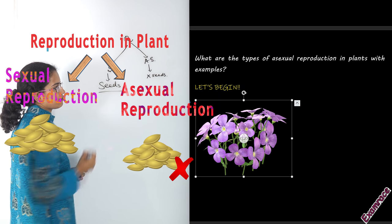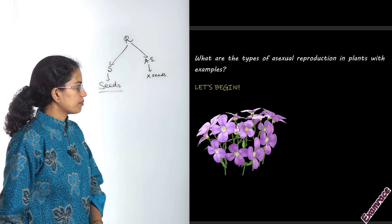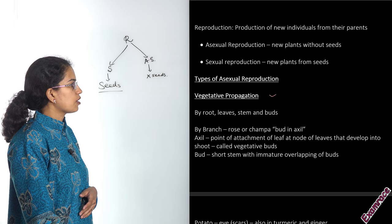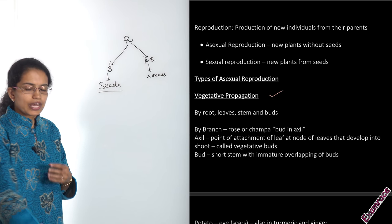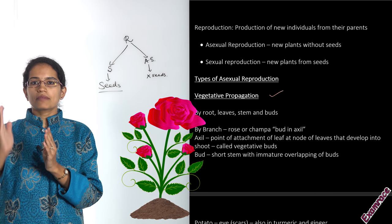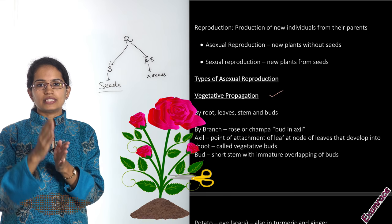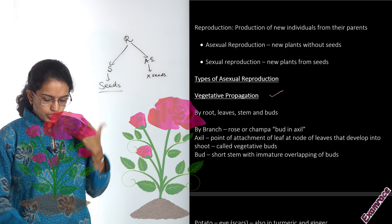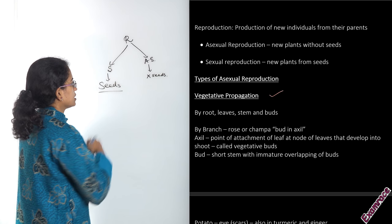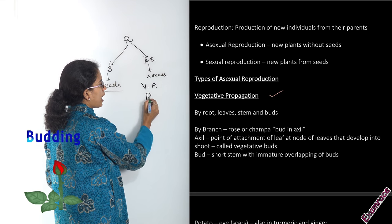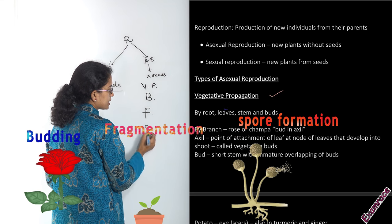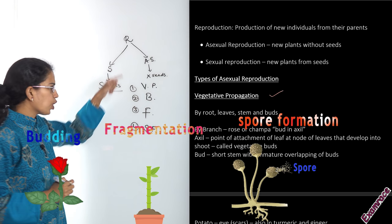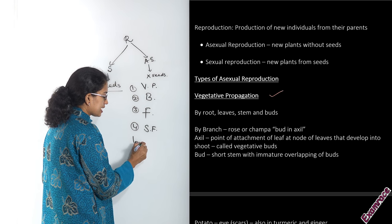Asexual reproduction happens without seeds — there is no requirement for seeds to be present. Sexual reproduction requires seeds. That's the basic difference between the two types. Now, let's begin with asexual reproduction. The first common method is vegetative propagation. You would have commonly seen a rose plant — it usually propagates by means of grafting. A branch is cut and put into new soil, and later you see the rose flower. Asexual reproduction also includes budding, fragmentation, and spore formation.